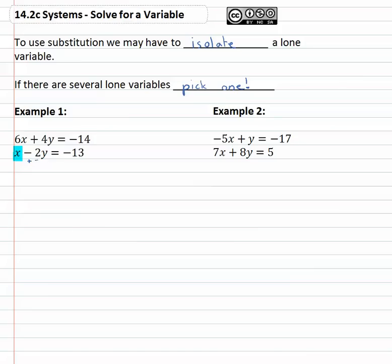In this case if I add 2y to both sides of the equation, I end up with x equals 2y minus thirteen. They're not like terms, so don't combine them. And now we have that x equals stuff that we were looking for.